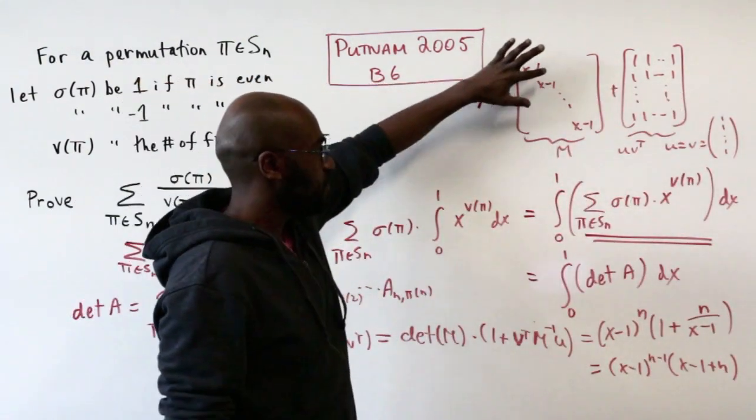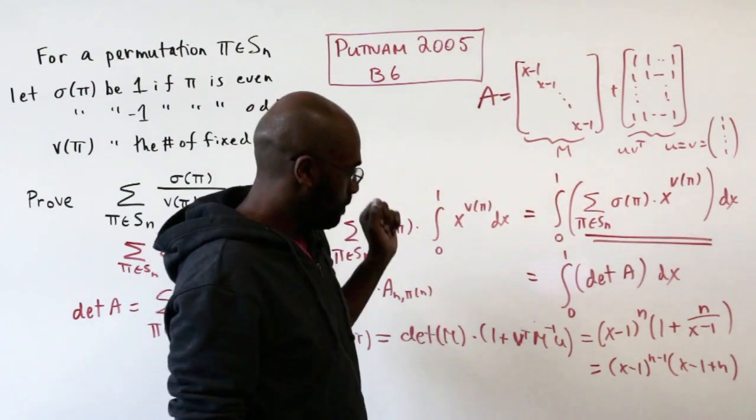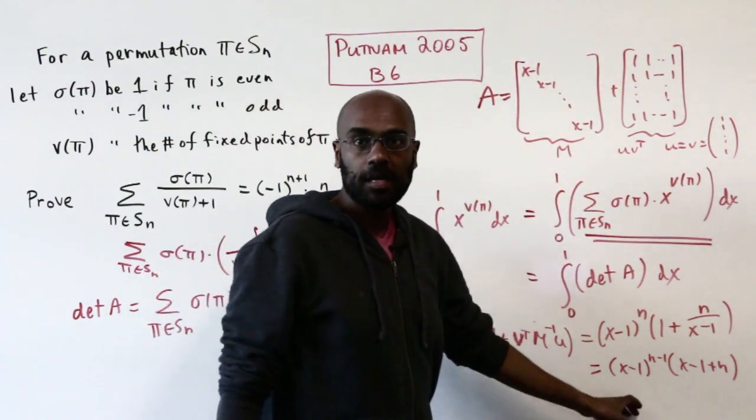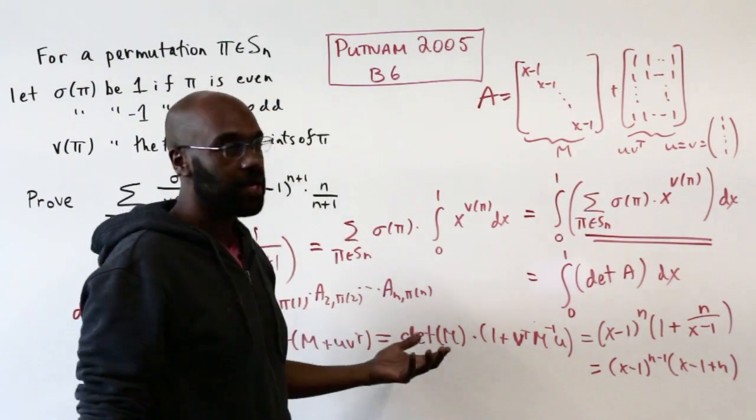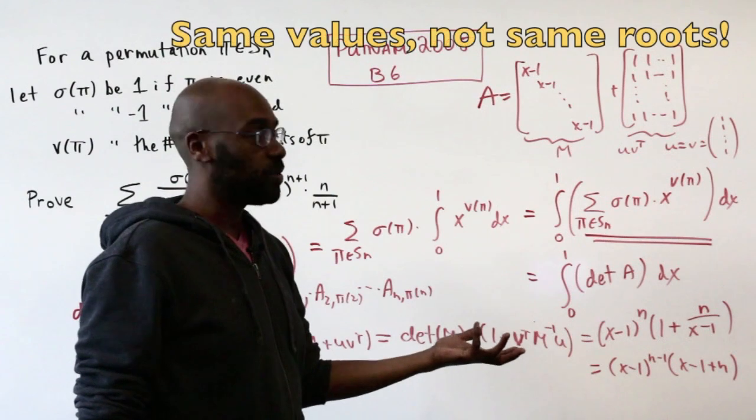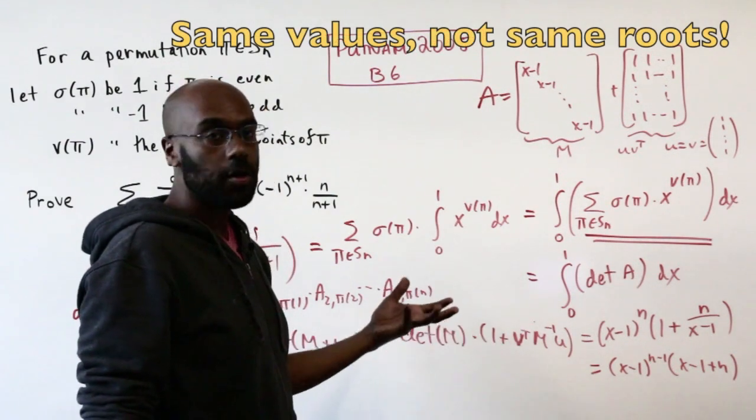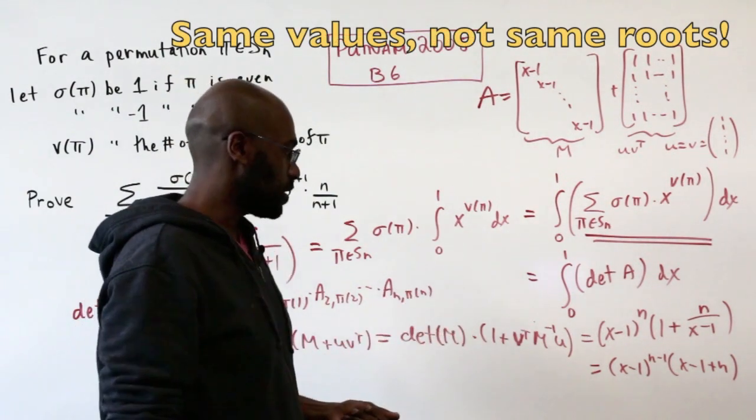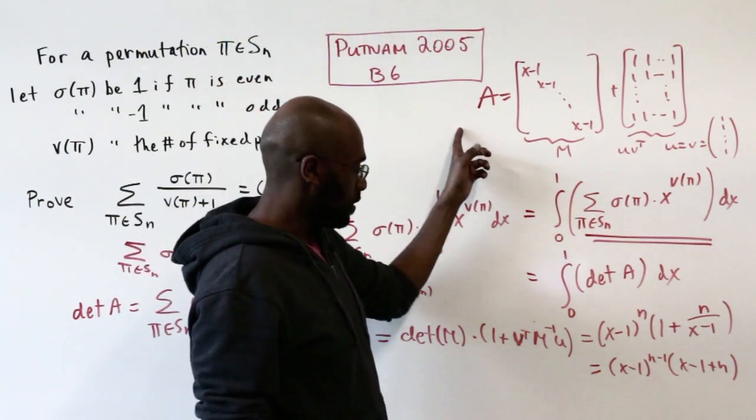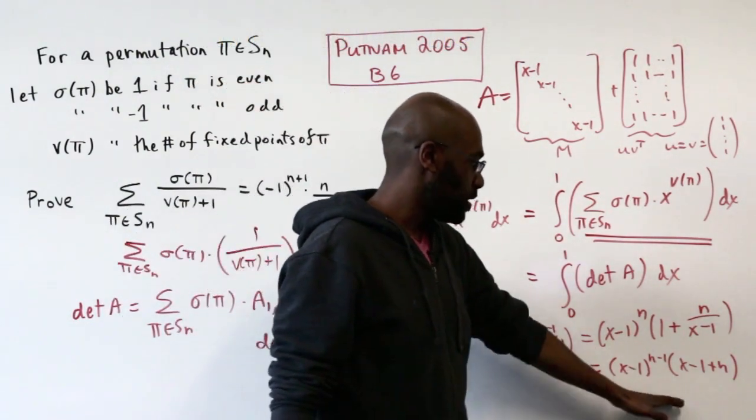This equality holds provided that M is invertible, so it holds for all values of x that are not equal to 1. But these two things are polynomials, and for all values of x besides x equals 1, they have all those values as roots. So two polynomials with infinitely many roots in common have to be the same polynomial. So the determinant of A is this quantity in general.